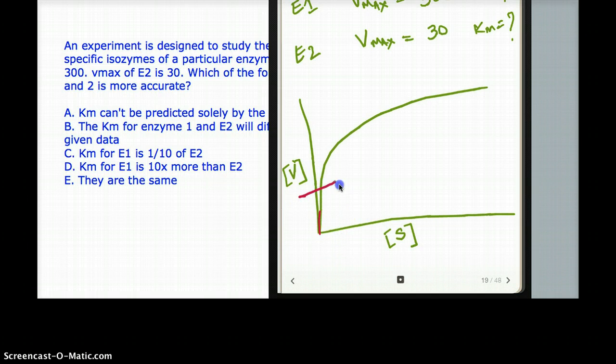Half of the slope is going to be the Vmax. And you draw the line parallel like this, the x-intercept is going to be the Km.